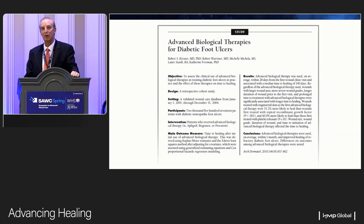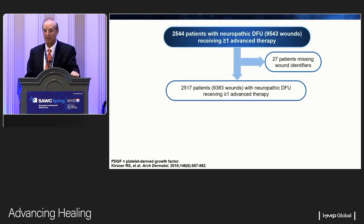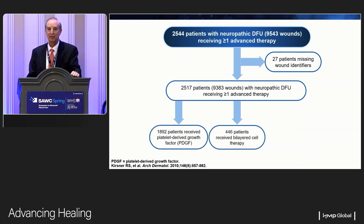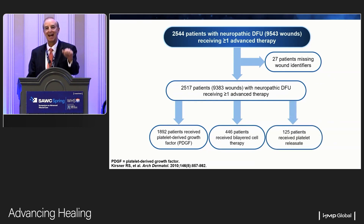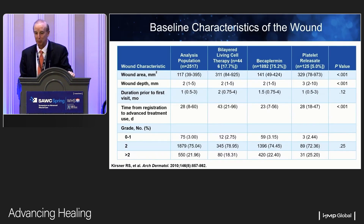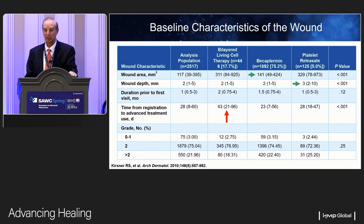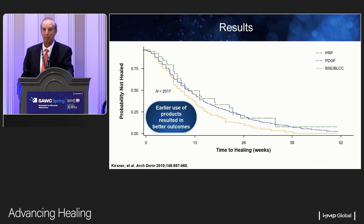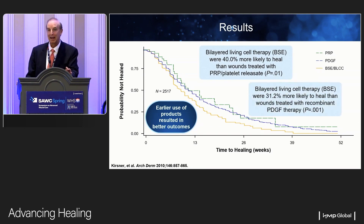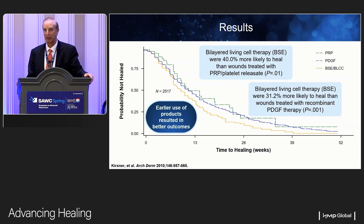We also looked at this data comparing a bilayered skin equivalent with different growth factors using the Net Health data set, where the endpoint was healing. Some products were used on smaller wounds, some on deeper wounds, and some weren't used as early as guidelines recommend — after four weeks. The bilayered living cellular construct did better than platelet releasate and topical growth factors. But importantly, for all products, all of them did better if used earlier. That's one of the major take-home messages: earlier use of these products results in better outcomes.